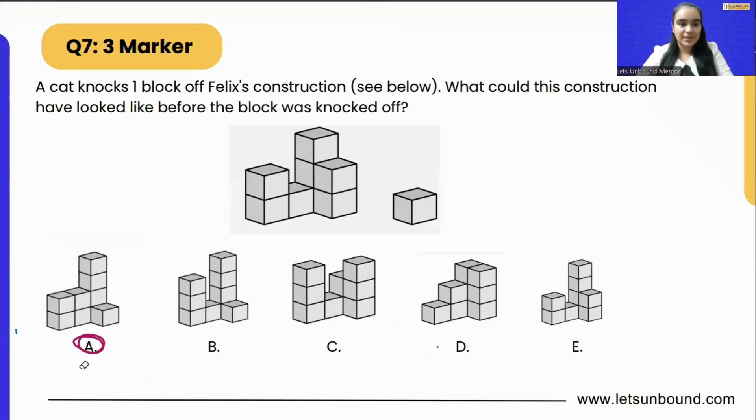The question is very interesting. A cat knocks one block off Felix's construction. What could his construction have looked like before the block was knocked off? So we can see here this is Felix's construction, and this is the block that the cat has knocked off. Our task is very simple: we just have to place this block back into this figure.